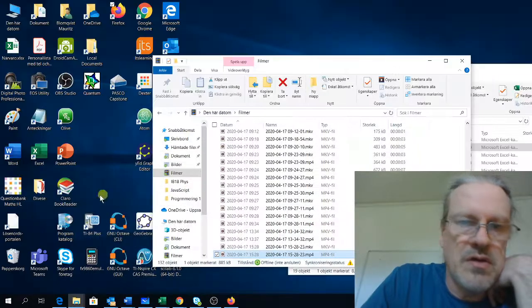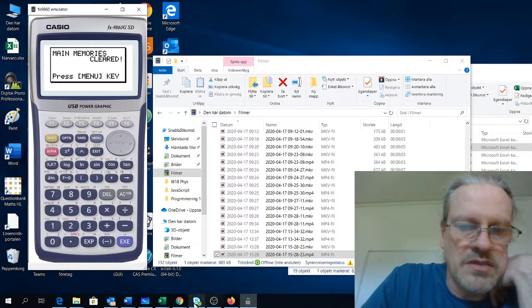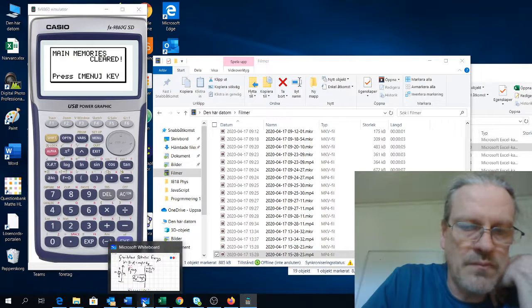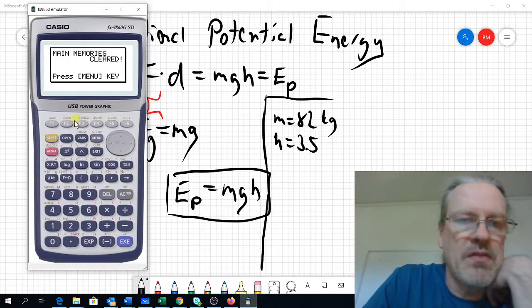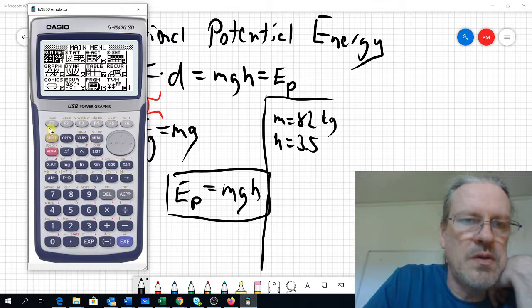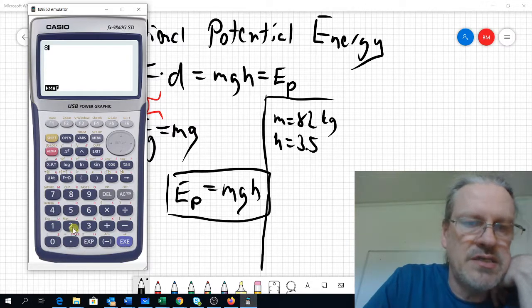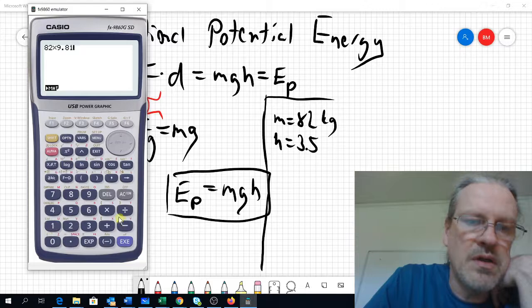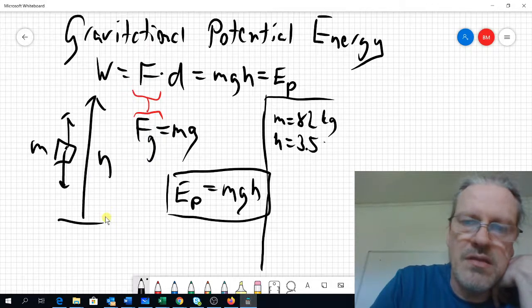So I need to have the calculator going. Let's go back to our menu. So we will calculate the mass is 82 times g, 9.81, times the height, 3.5 meters.